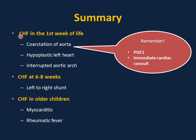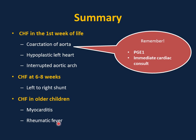Very important: congestive heart failure in the first week of life — consider left-sided obstructive heart defects like coarctation of aorta, hypoplastic left heart, and interrupted aortic arch. For these obstructive lesions, give prostaglandin to open the ductus and obtain immediate cardiac consult. Congestive heart failure at 6 to 8 weeks of age is most likely due to left-to-right shunt. Congestive heart failure in older children suggests acquired causes like myocarditis or rheumatic heart disease.